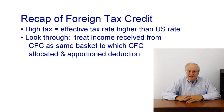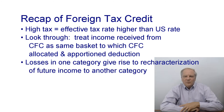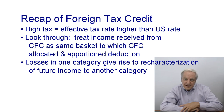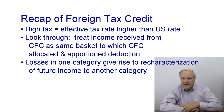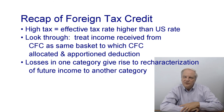Certain exceptions to these rules apply in certain cases. Losses in a category in one year may offset income in another category in that year; in such case, future income in the loss category is re-characterized to the other category in later years. Certain elections are available to mitigate the effect of these re-characterization rules.